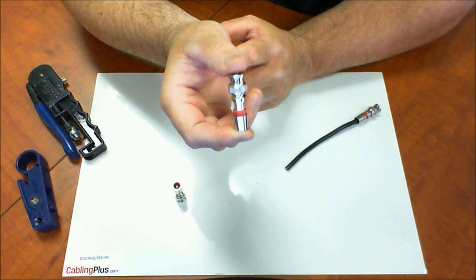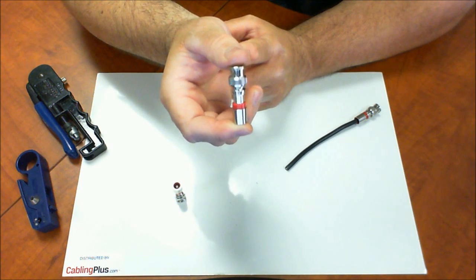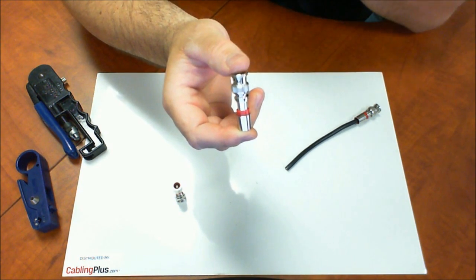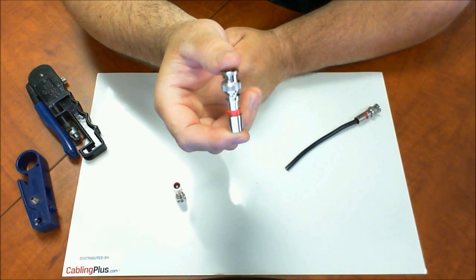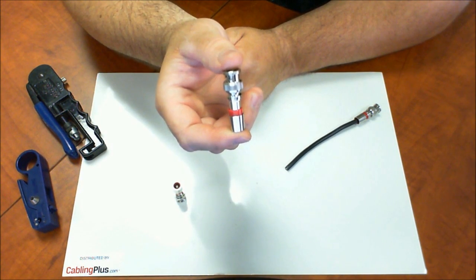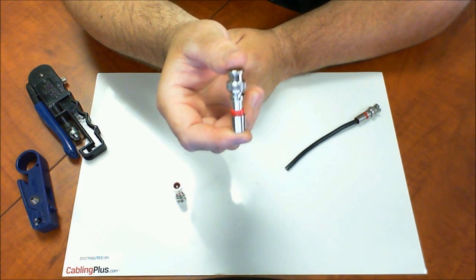Again, this is a BNC connector designed for RG59 coaxial cable, non-plenum CM or CM rated. This is going to provide you with a 360 degree compression crimp. It's 75 ohm rated and also is going to provide you with about 65 pounds of pull force.